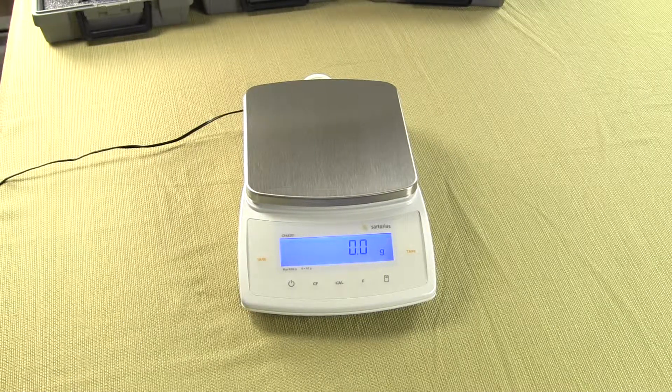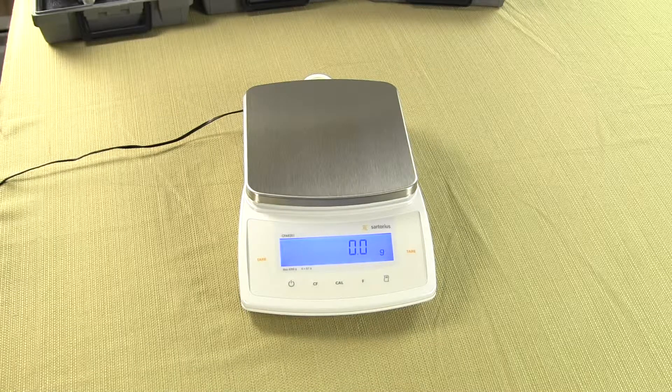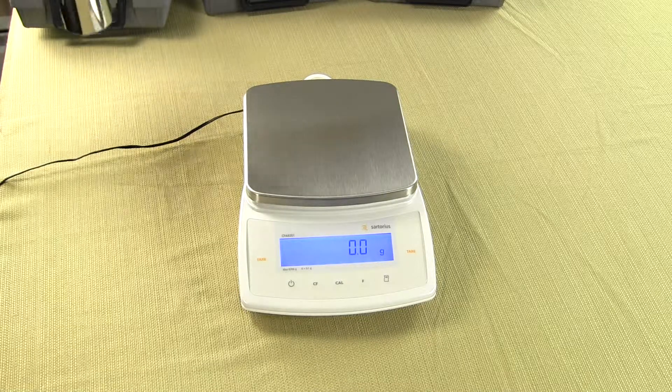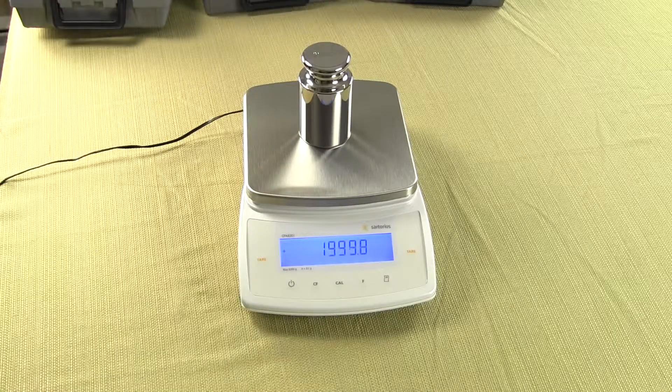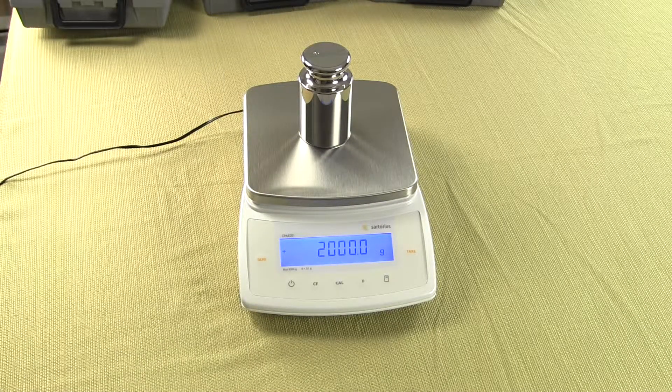This balance is 8,200 grams by a tenth of a gram readability. So we have a two kilogram weight on the balance and you can see it's right on the money.